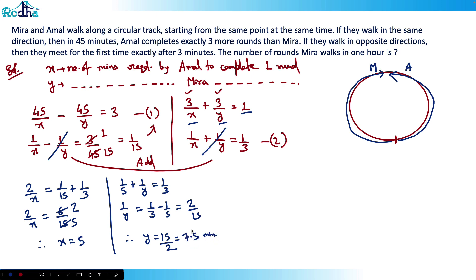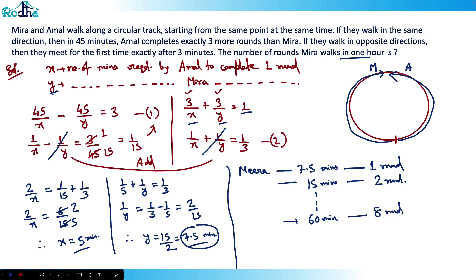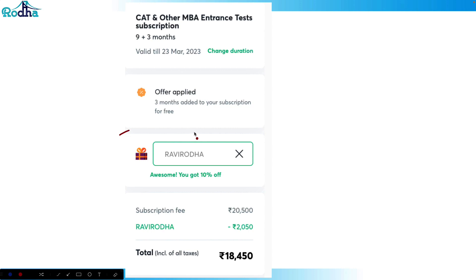So x = 5 minutes (Amal's time per round) and y = 7.5 minutes (Mira's time per round). Mira needs 7.5 minutes to complete one round, which means she completes two rounds in 15 minutes. In one hour (60 minutes), that gives 60/7.5 = 8 rounds. So the answer is 8 rounds. Hope you all got this — good question!